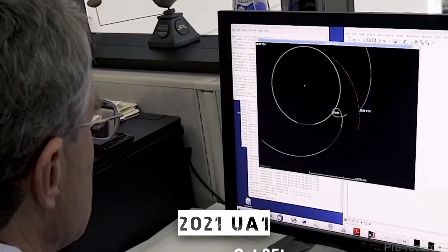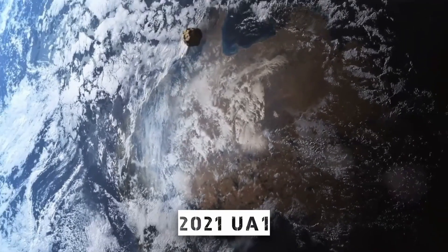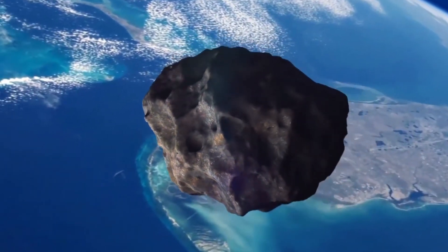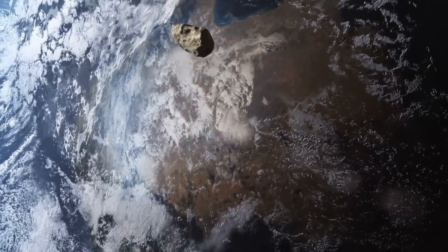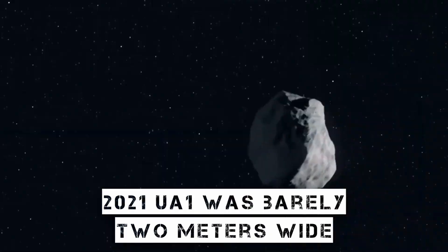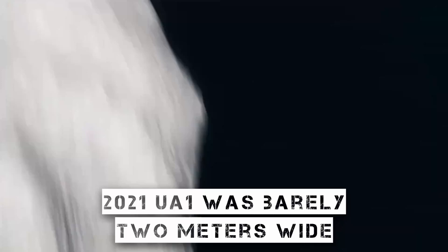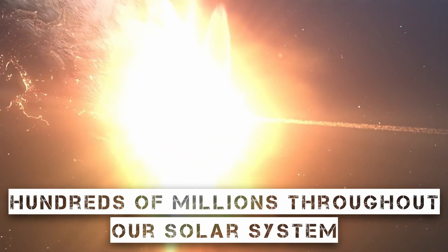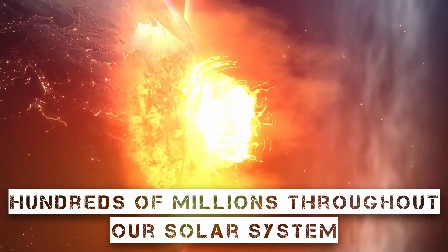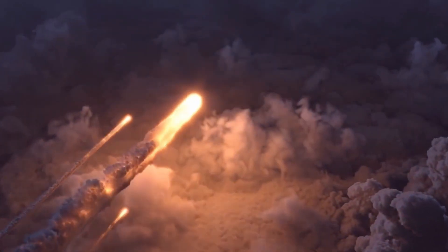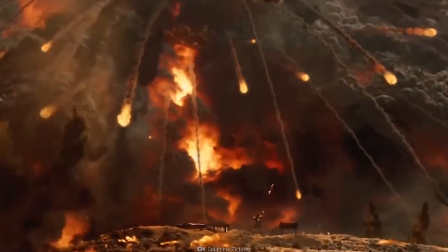2021 UA1 was an asteroid that nearly collided with Earth in 2021. It traveled over the Antarctic only a few thousand kilometers from Earth. This is uncomfortably close in cosmic terms. However, 2021 UA1 was barely 2 meters wide and did not constitute a significant threat. This magnitude of object probably exists in hundreds of millions throughout our solar system, and it frequently collides with Earth. In these situations, there is no risk to human life because the majority of the object burns up in the sky and produces an amazing light display.